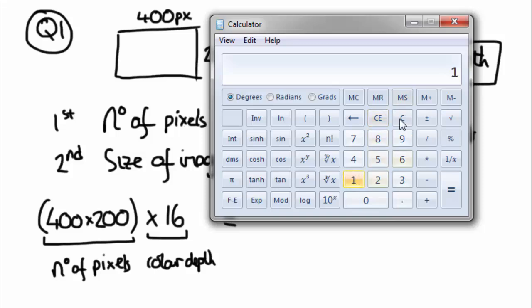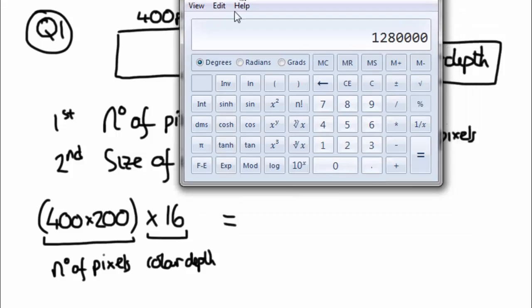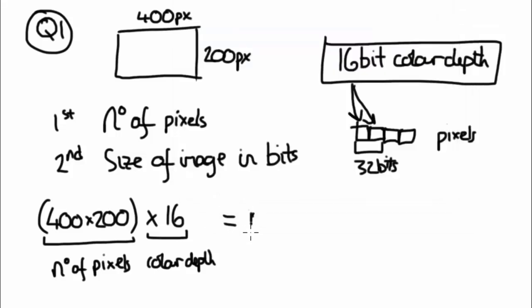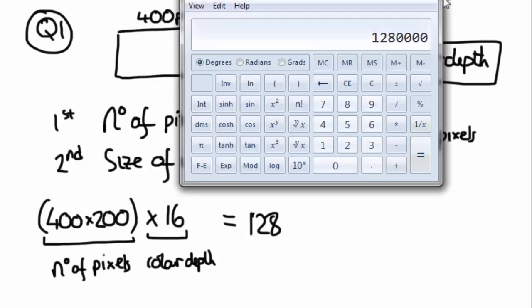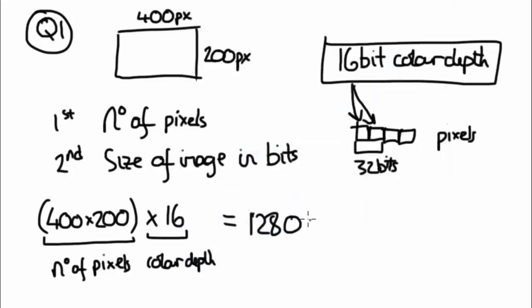400 times 200, and then times 16. So you times it, you don't divide it. So times 16, and that would give you 1,280,000 and that's in bits. Now that's far too large a number to actually leave it like that.